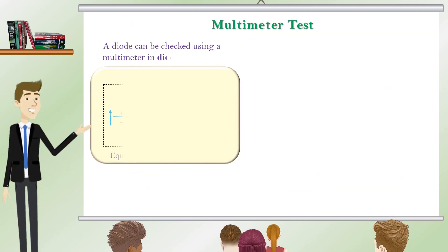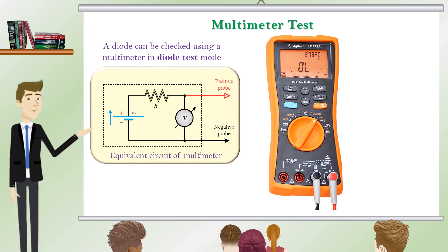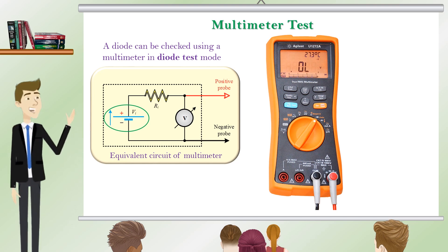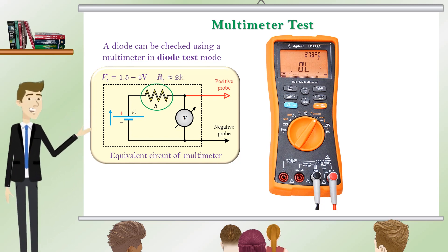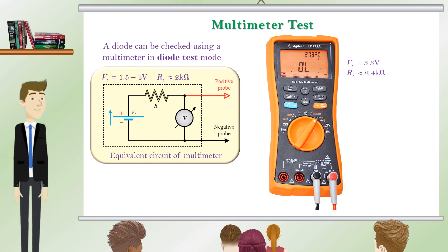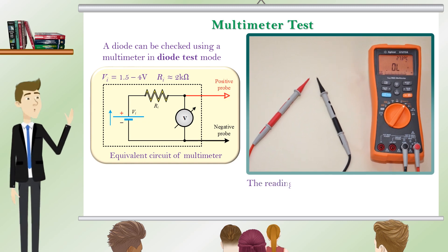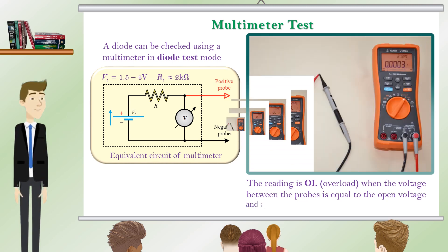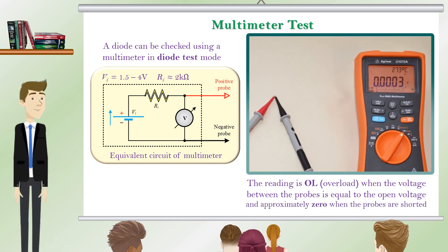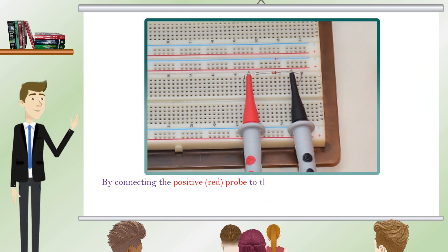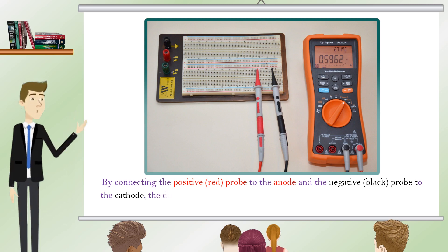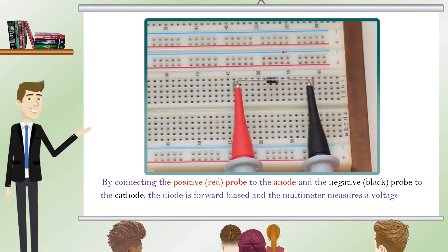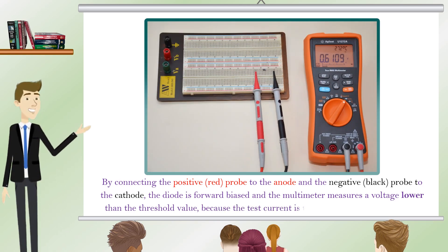A diode can be checked using a multimeter in diode test mode. The multimeter applies a small DC voltage, typically 1.5 to 4 volts, to its probes through a resistor rated at about 2 kilo ohms. The instrument indicates the voltage across the probes on the display. The reading is OL when the voltage between the probes equals the open circuit voltage, and approximately 0 when the probes are shorted. By connecting the positive probe to the anode and the negative probe to the cathode, the diode is forward biased and the multimeter measures a voltage lower than the threshold value, because the test current is too low.